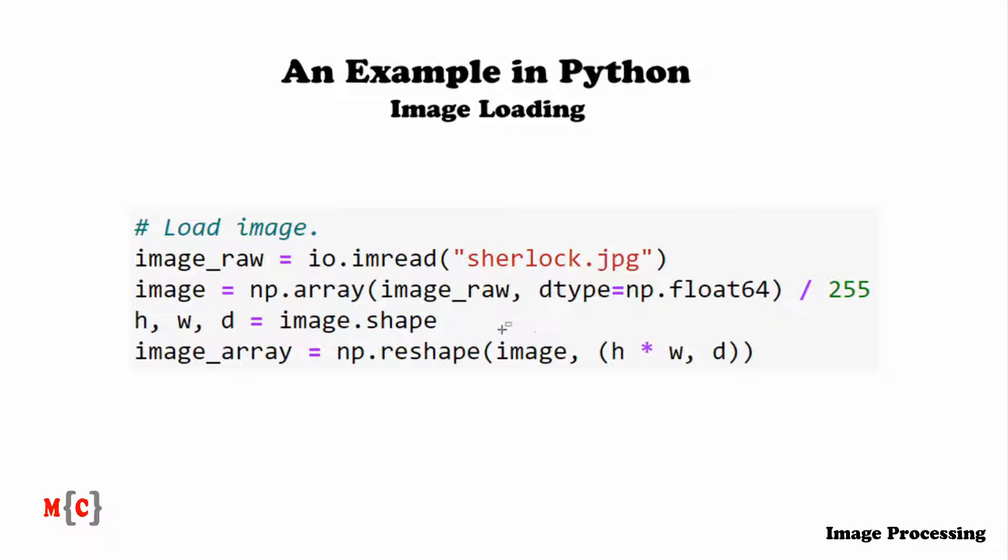Now, based on the shape of this matrix, we're going to define an image array by reshaping it. Therefore, it now is the shape of h times w, comma, d.